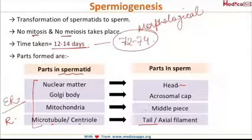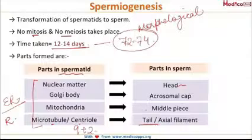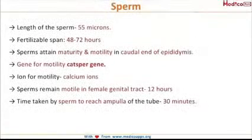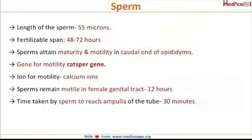Regarding the arrangement of the tail: since the tail is formed from the centriole, and the centriole has a 9+2 arrangement, the tail also has a 9+2 arrangement. As for the length of the sperm, it is 55 microns.